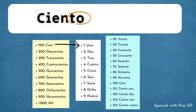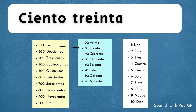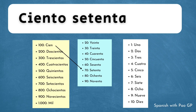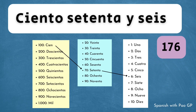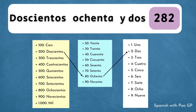Ahora tenemos la estructura del cien. Vamos a agregarle -to cuando lo unimos a otros números. Como ciento uno, ciento treinta o ciento treinta y dos, ciento setenta o ciento setenta y seis. En los números más grandes no tenemos esta modificación porque los números ya contienen la terminación.